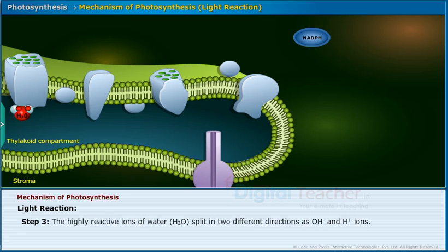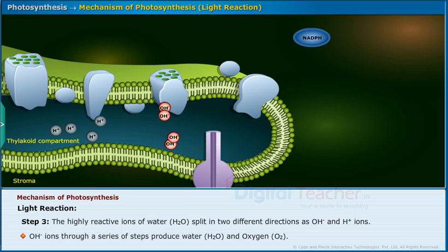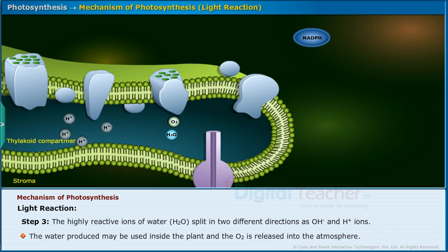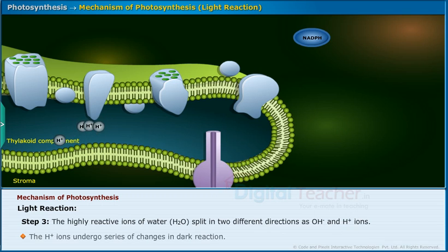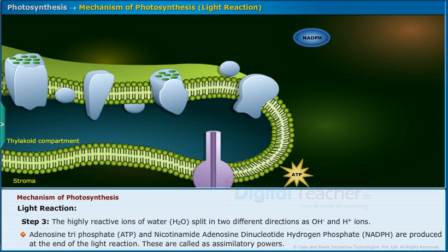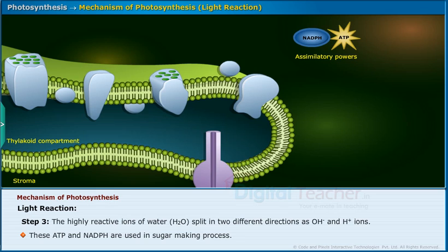Step 3: The highly reactive ions of water split in two different directions as hydroxyl and hydrogen ions. The hydroxyl ions, through a series of steps, produce water and oxygen. The water produced may be used inside the plant, and the gas oxygen is released into the atmosphere. The hydrogen ions undergo a series of changes in the dark reaction. Adenosine triphosphate (ATP) and nicotinamide adenosine dinucleotide hydrogen phosphate (NADPH) are produced at the end of the light reaction. These are called assimilatory powers, and they are used in the sugar-making process.